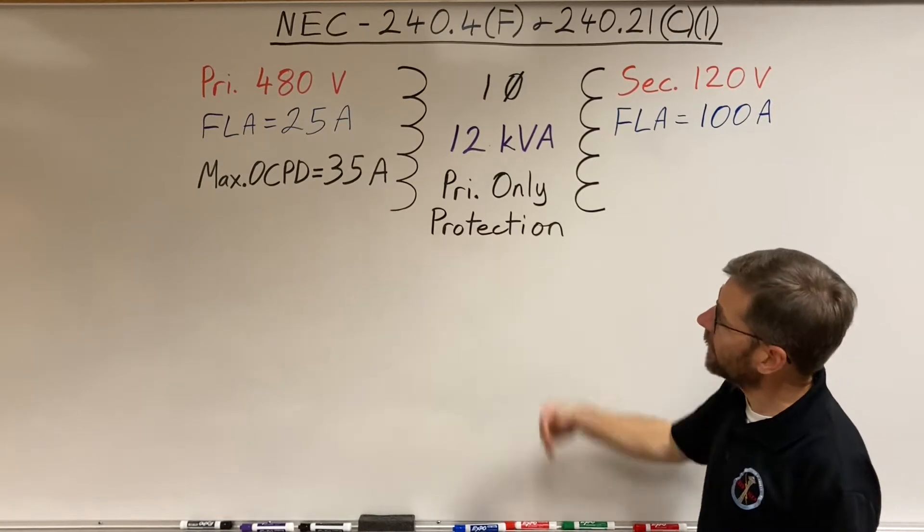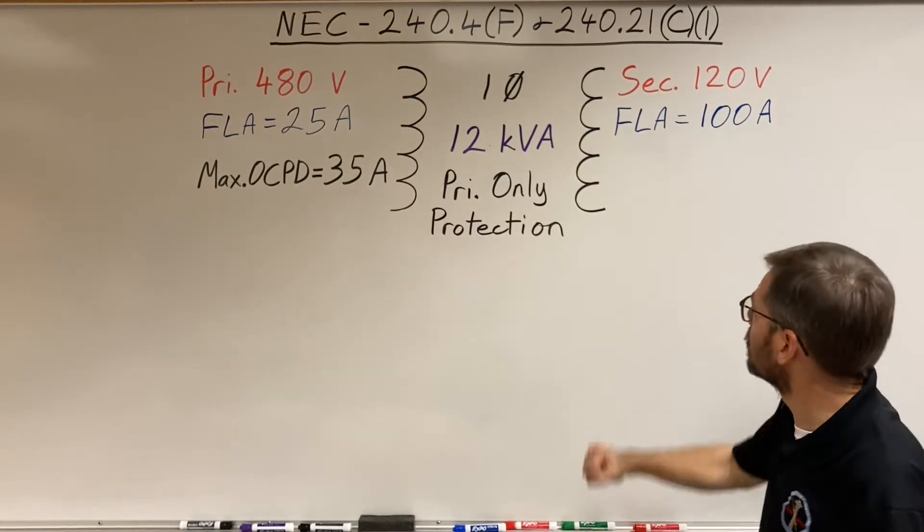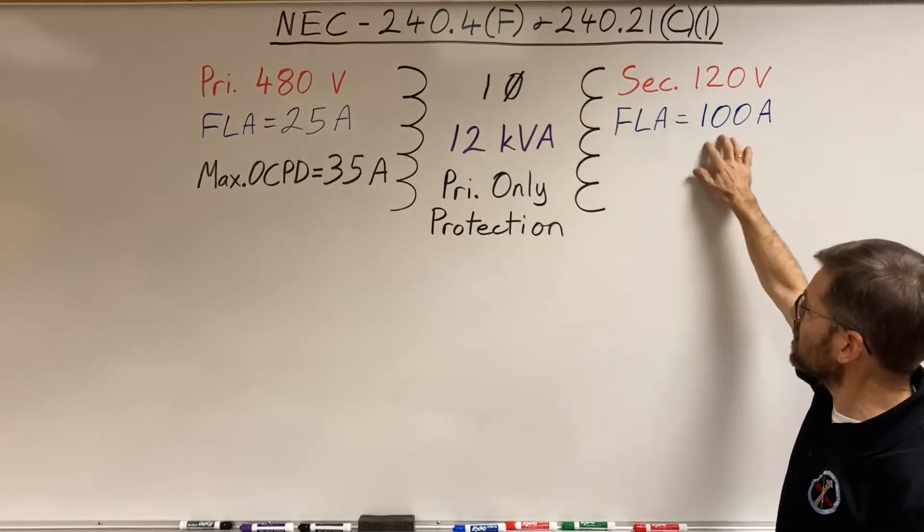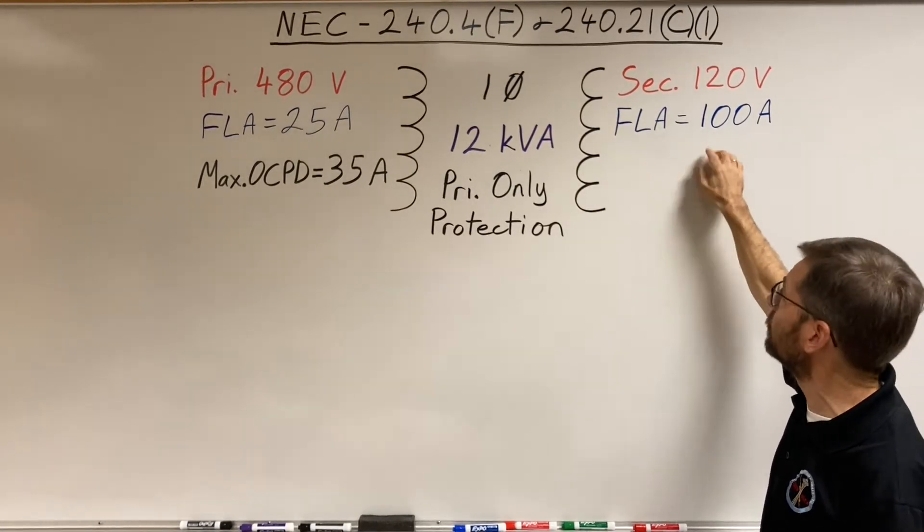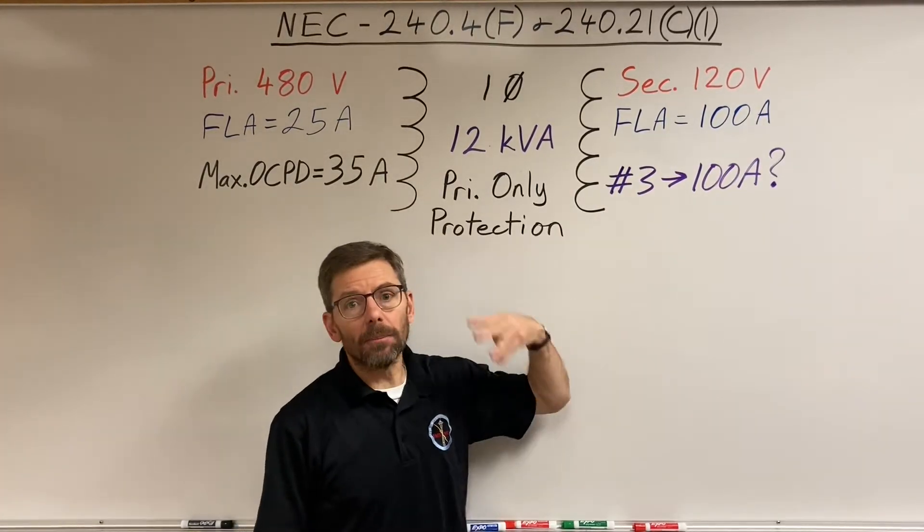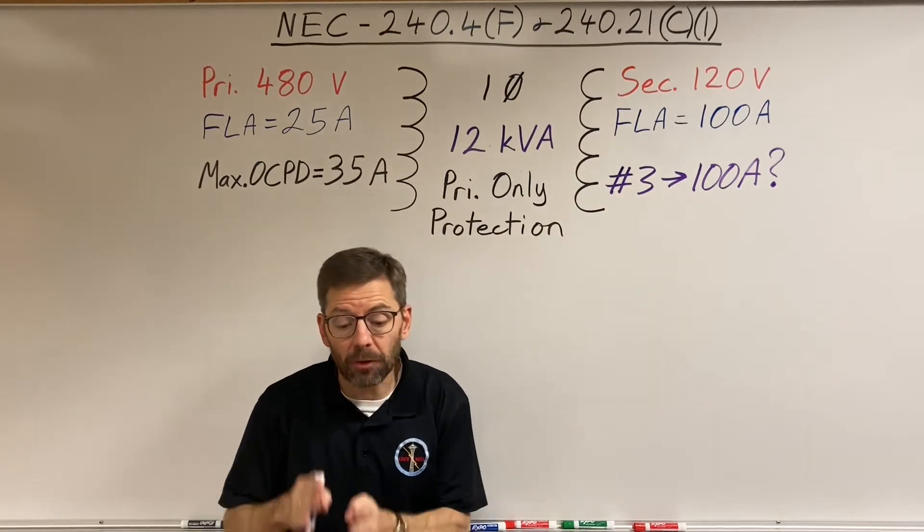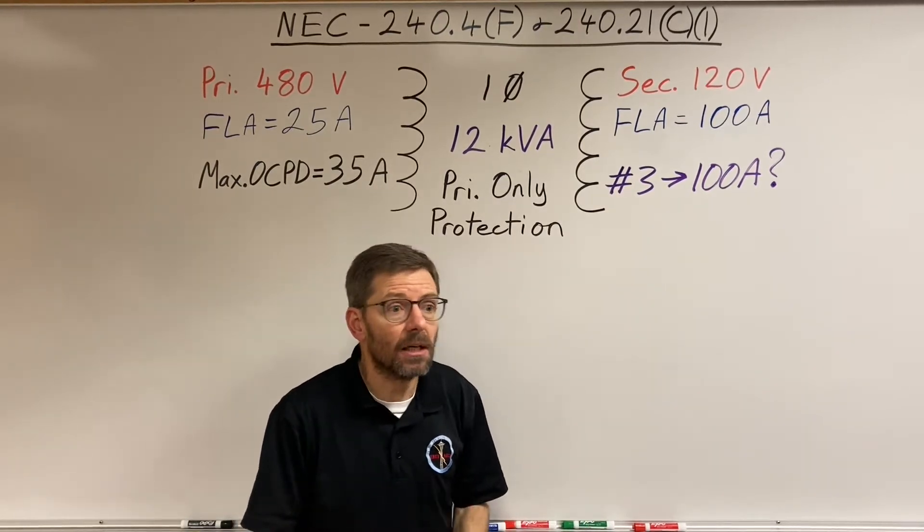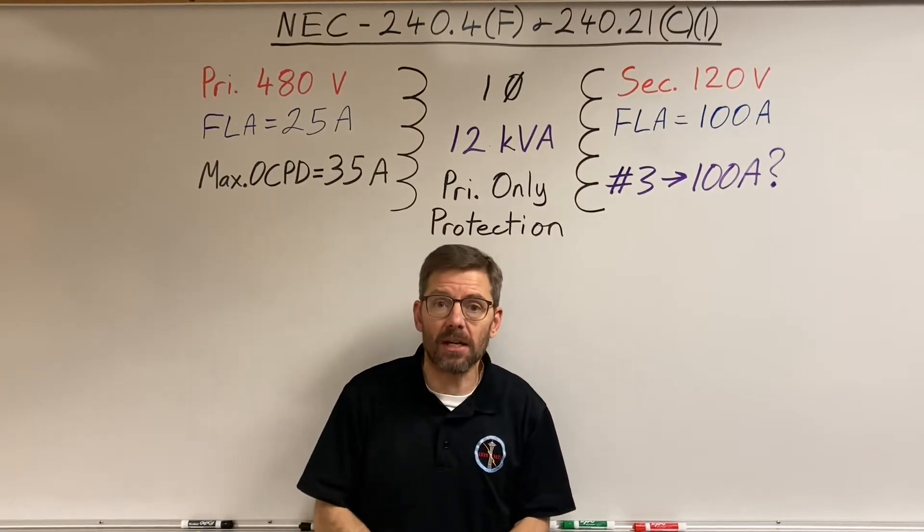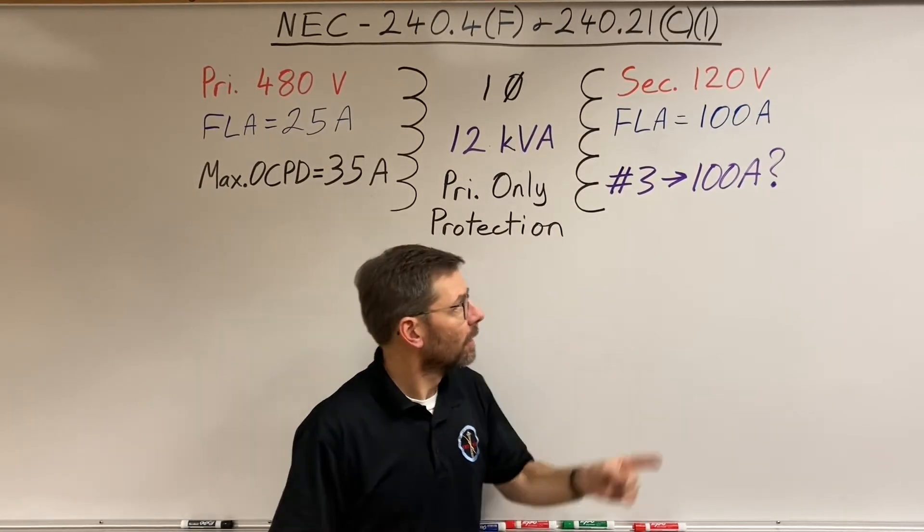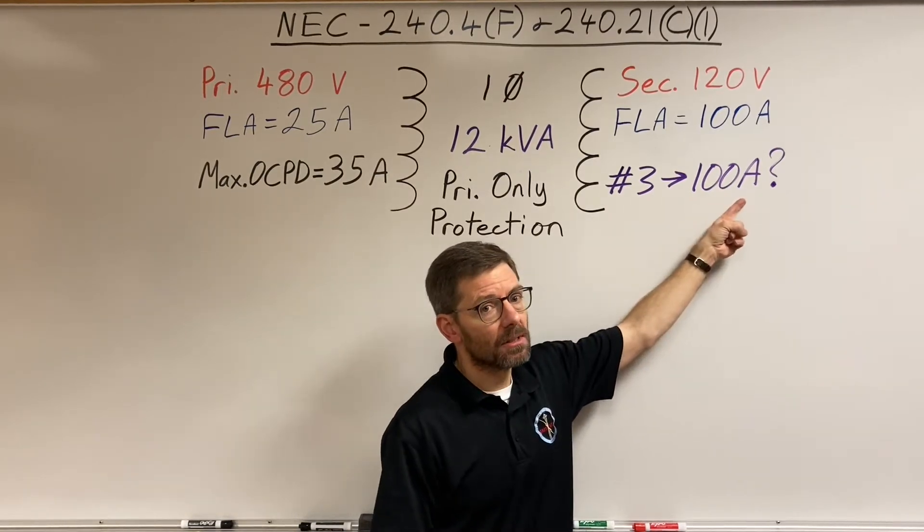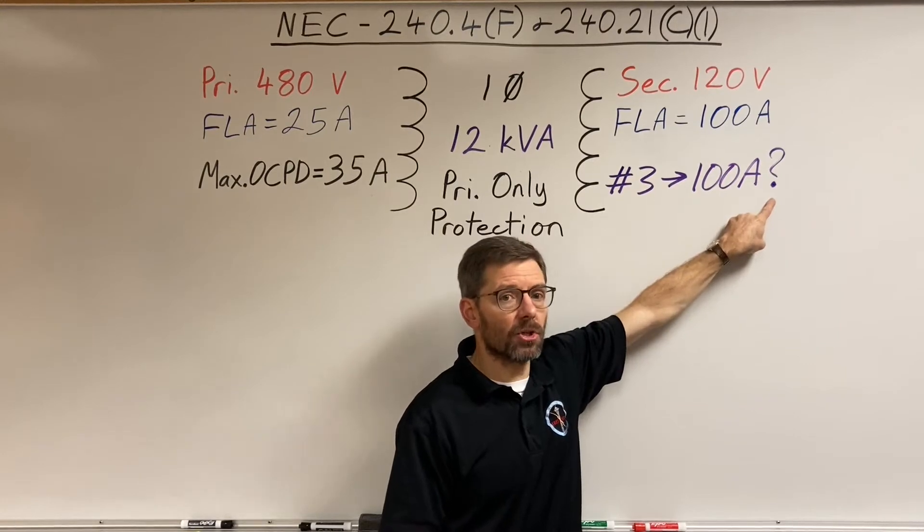Let's see how it calculates out here. We're going to start looking at my secondary full load amps and say, what size conductor do I need minimum to carry 100 amps? I look at my ampacity table 310.16, and I'm looking at 75 degree wire, 75 degree Celsius column copper. I come up with a number three can carry 100 amps. Seems good, but I put a question mark.